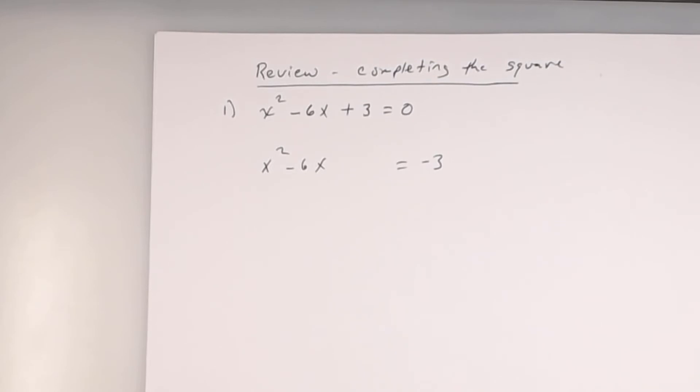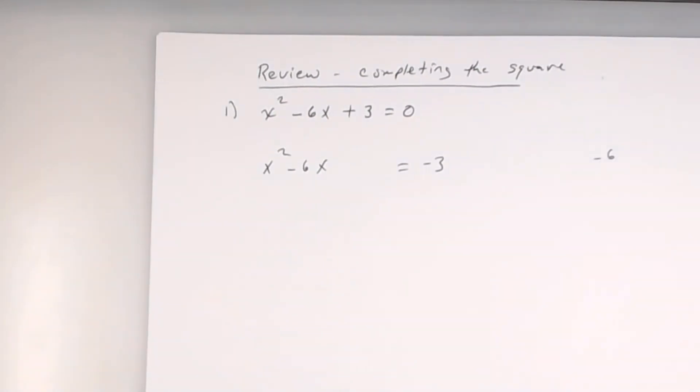What is the coefficient of x? Negative 6. Negative 6. Not 6. It's a negative 6. So go off to the side, or in your mind. It doesn't matter. You have to write it down. Go off to the side and make sure you do this correctly. Negative 6.